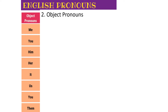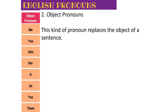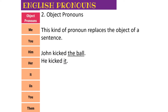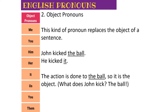Object pronouns are the opposite. An object is something that has the action done to it. Here they are: me, you, him, her, it, us, you, them. This kind of pronoun replaces the object of a sentence. The ball is kicked - the ball is not doing the kicking, so the ball is the object of the sentence. I replace 'the ball' with 'it', and therefore 'it' is still the object of the sentence.